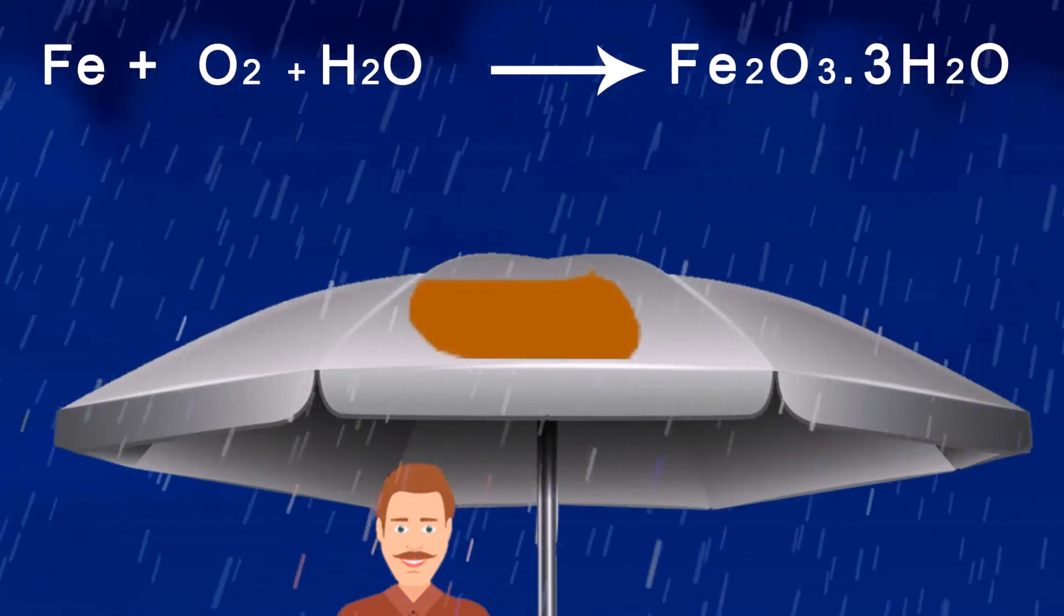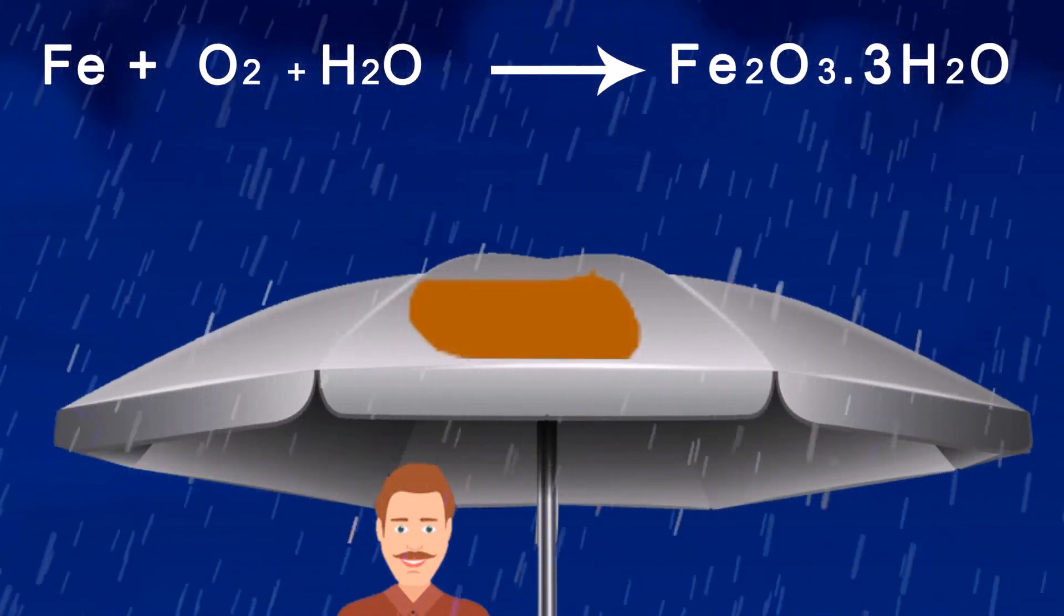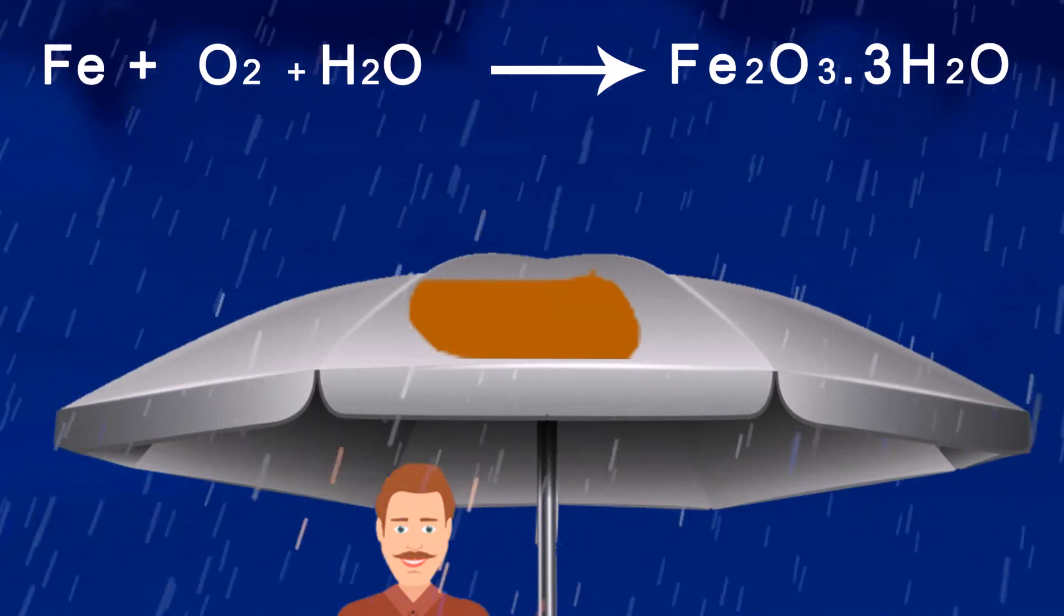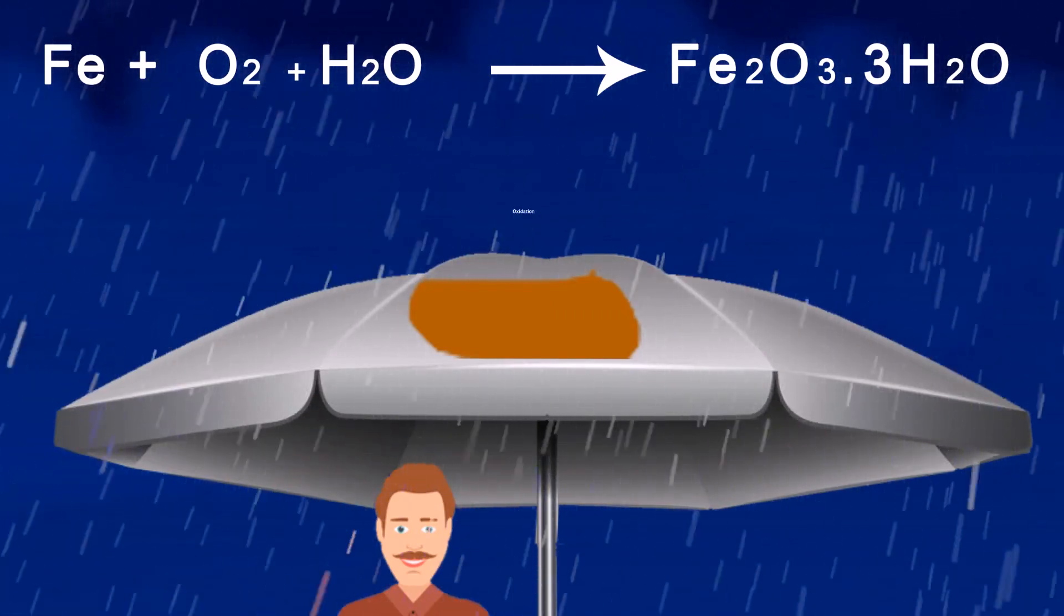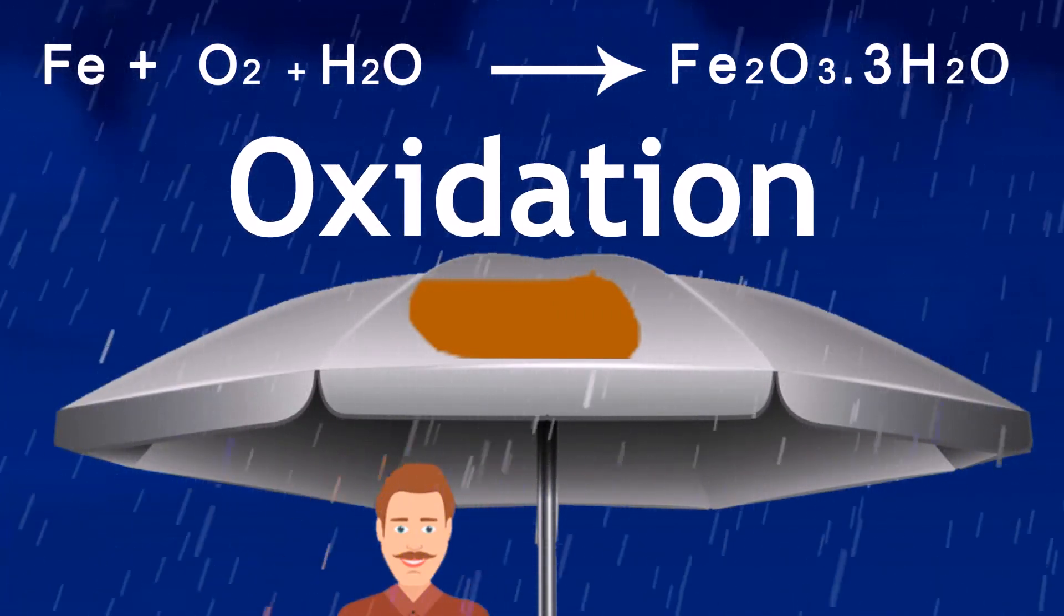This forms a new compound called an oxide and weakening the bonds of the metal itself. Also, some people refer to rust generally as oxidation. After we finished the discussion of redox reactions, let's go to discuss balancing equations.